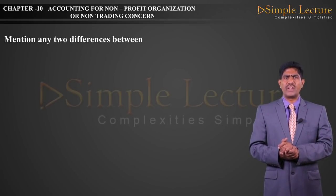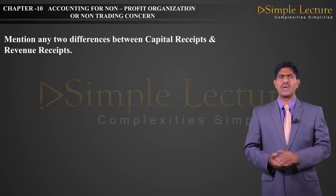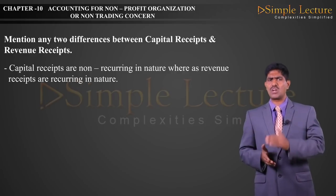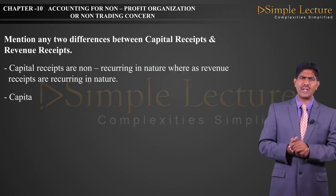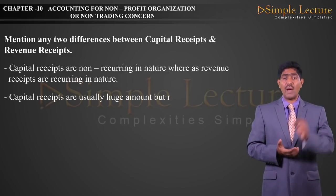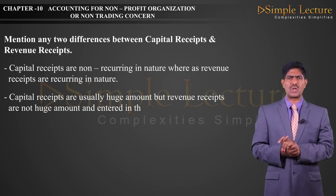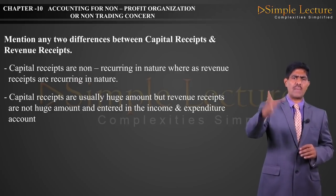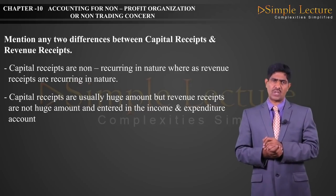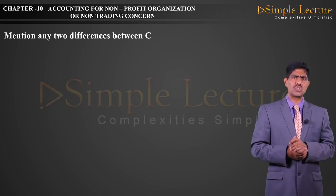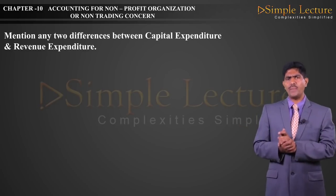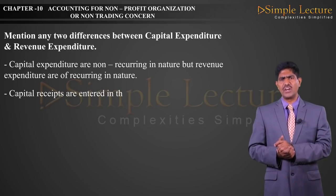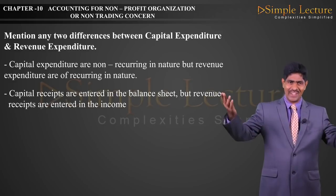Mention any two differences between capital receipts and revenue receipts. First: capital receipts are non-recurring in nature, while revenue receipts are recurring in nature — capitals are not often received, revenues are often received. Second: capital receipts are usually a huge amount, but revenue receipts are not a huge amount. Capital receipts are always recorded in the balance sheet, while revenue receipts are recorded in the Income and Expenditure Account. Differences between capital expenditure and revenue expenditure: capital expenditures are non-recurring in nature, while revenue expenditures are recurring in nature. Capital expenditure is entered in the balance sheet, but revenue expenditure is entered in the Income and Expenditure Account.